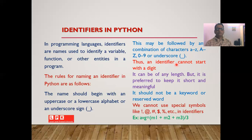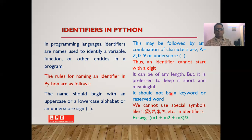An identifier cannot start with a digit — the first character must be a letter. There is no restriction on the number of characters in the identifier name, but it is preferable to keep it short and meaningful so that the readability of the program is enhanced. It should not be a keyword or reserved word, and we cannot use special symbols such as !, @, #, $, % in identifiers.